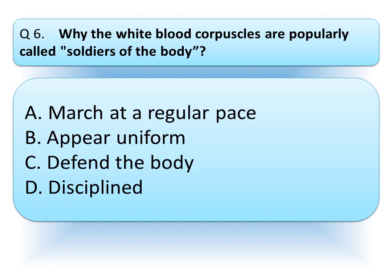Why are white blood corpuscles properly called soldiers of the body? Option A, March at a regular pace; option B, Appear uniform; option C, Defend the body; or option D, Disciplined. Think about the correct answer and write your answer in the comment box.